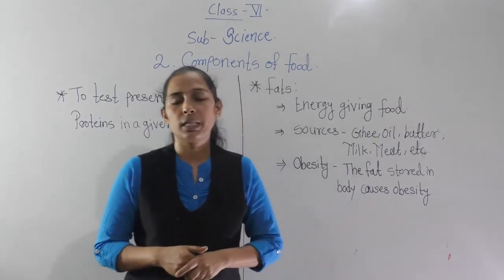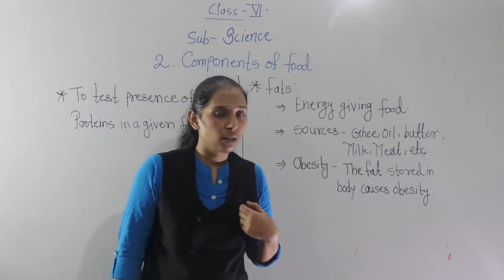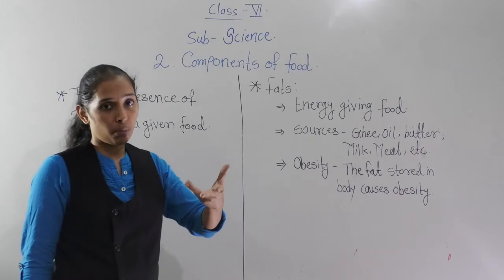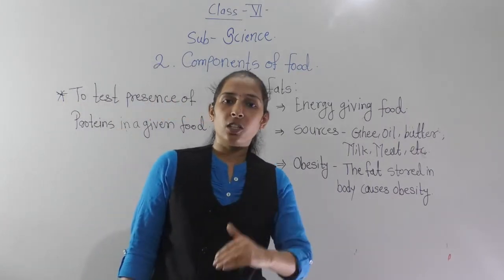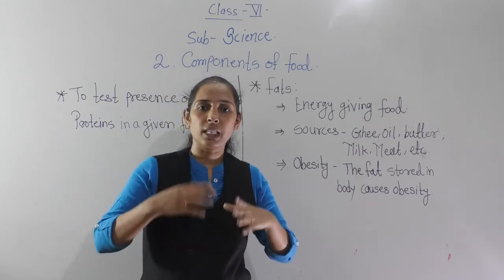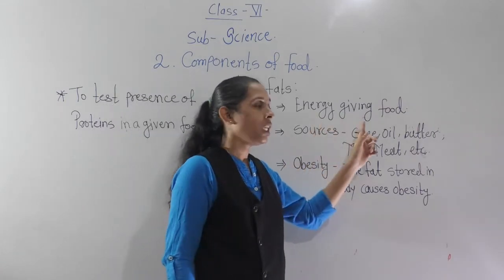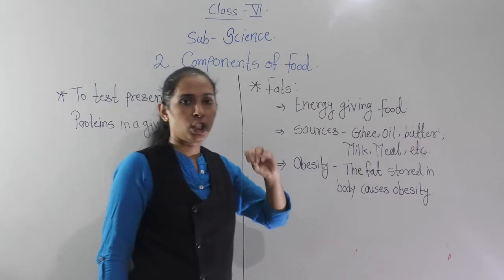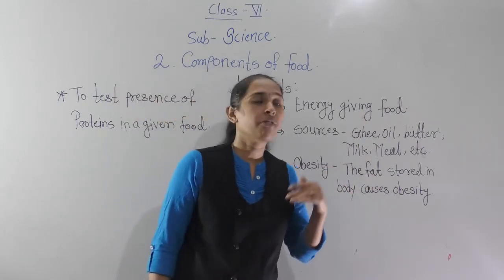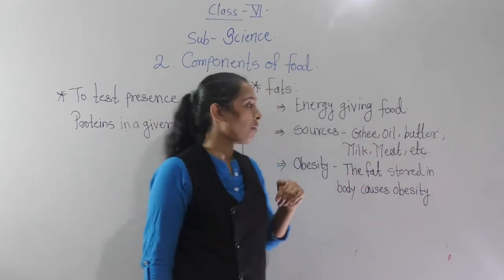Today we will move to the next point and start our next nutrient, which is fats. Fats also provide us energy. Carbohydrates also provide energy, but the amount of energy given by fats is more — if we compare, the energy we get from fats is more than from carbohydrates. Since fats give us energy, fat is also called energy-giving food. Fats are obtained from plant and animal sources — sources like ghee, oil, butter, milk, meat, and so on.